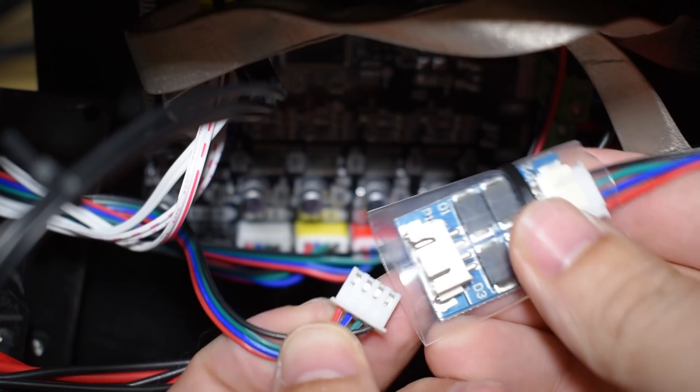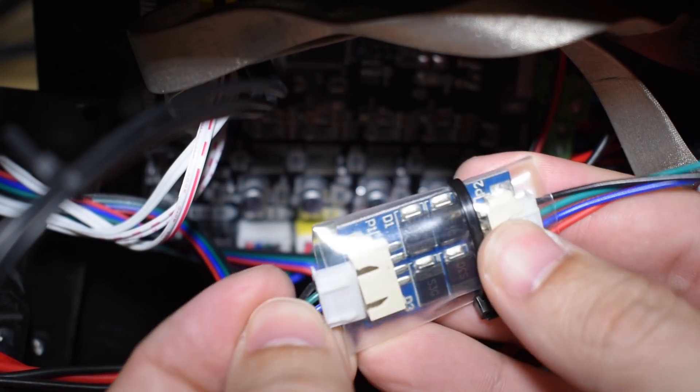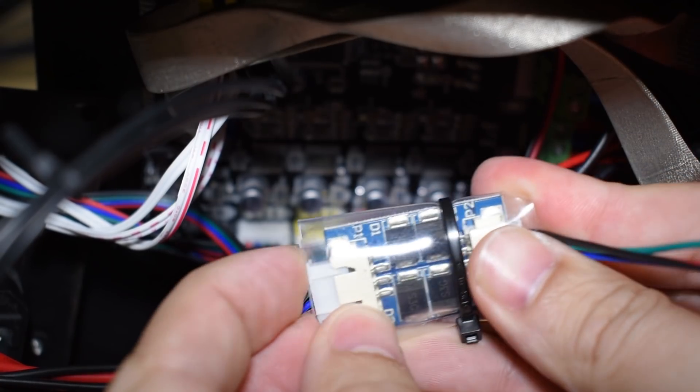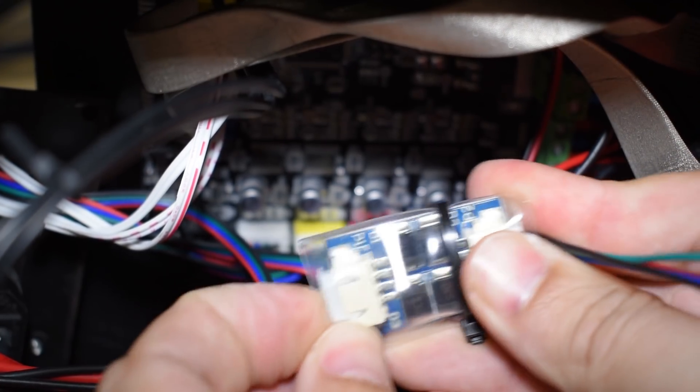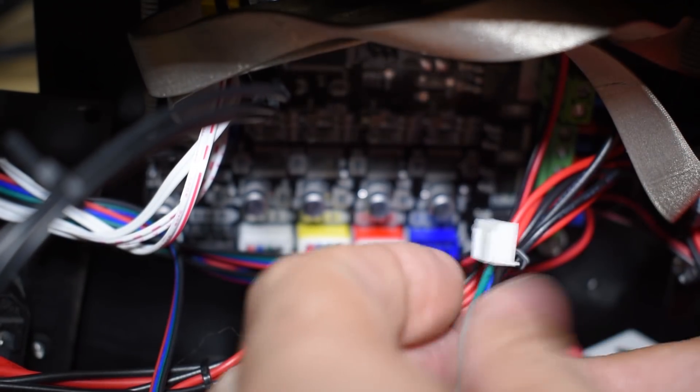Connect that to the smoother. And connect the smoother cable back to the board.